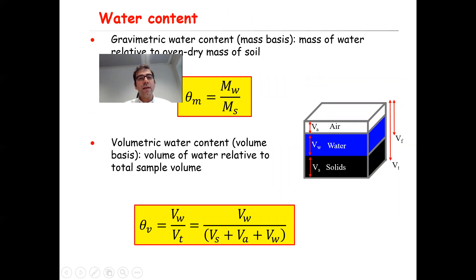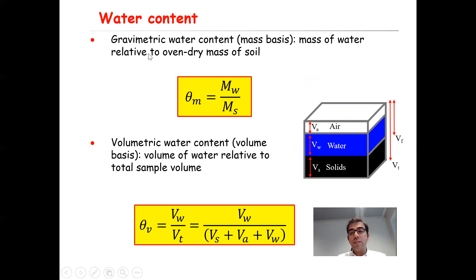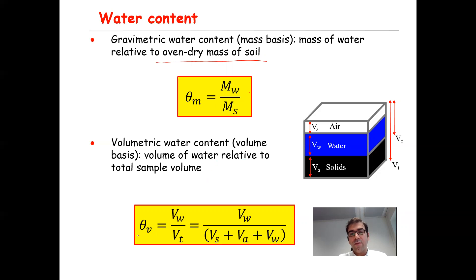Another important quantity is water content, which can be presented in two ways: gravimetric water content or mass basis water content, which is mass of water Mw divided by the oven dry mass of soil Ms, so theta_m equals Mw divided by Ms. Another way is volumetric water content, theta_v, that is volume of water Vw divided by the total volume Vs plus Va plus Vw.